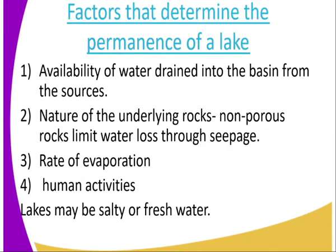What are the factors that determine the permanency of a lake? Number one: the availability of water — that is, the water drained into the basin. If permanent rivers are feeding the lake, then that lake will be permanent. But if there are only semi-permanent or seasonal rivers, that lake will be semi-permanent.